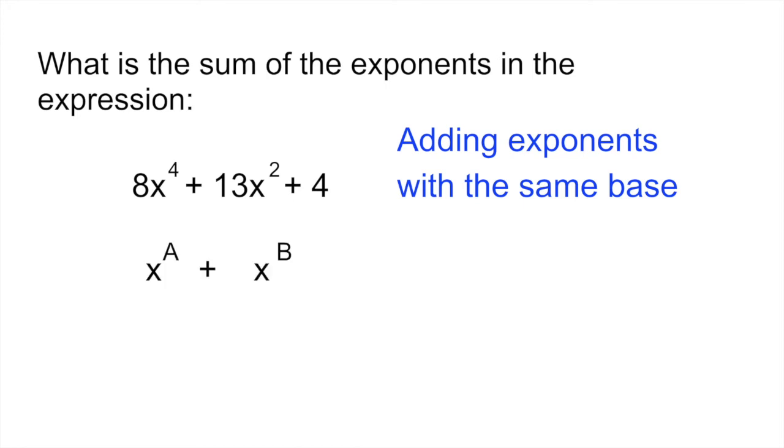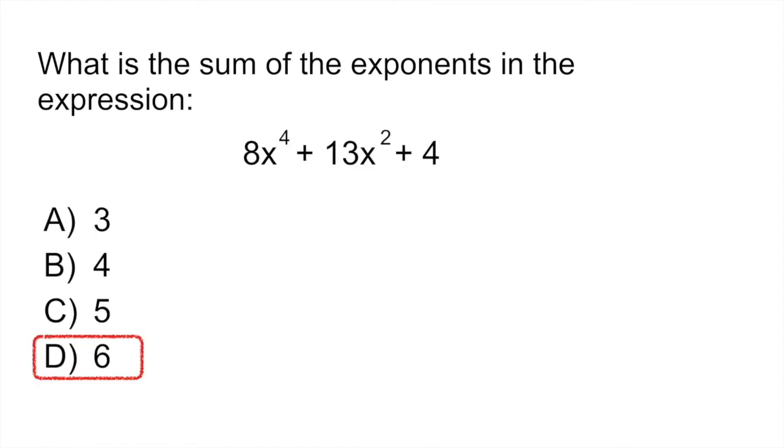So when you have, for example, x raised to a plus x raised to b, so they have the same base, all you have to do is add those exponents. So in this case, we would say a plus b. If we look back to our problem, we have x to the power of 4 plus x to the power of 2. So again, our exponents have the same base. They both have x as their base, so all you have to do is add the exponents 4 plus 2. That gives you 6, which is answer D.